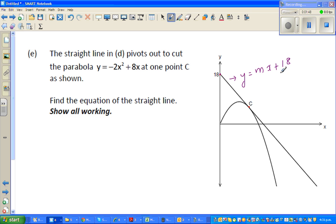So mx plus 18, sorry the gradient would be negative, that's what I can say because it has a negative slope here. And the equation of the parabola is already y equals, we know, is minus 2x squared plus 8x.